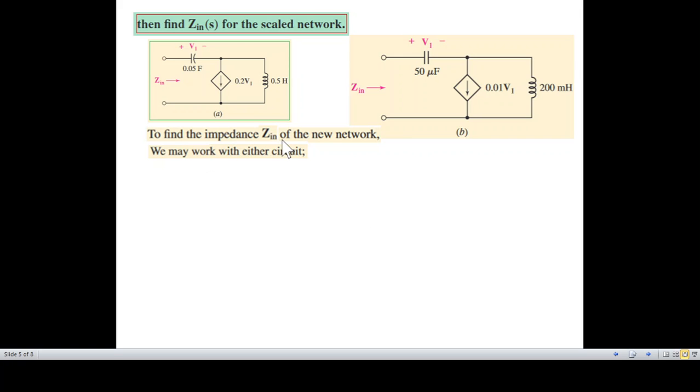To find impedance Z_in of the new network, we may work with either circuit, either this or this, but preferable is the one with the small values. Let's proceed by first finding the Z impedance of the unscaled network, that is this one, and then scaling the result.